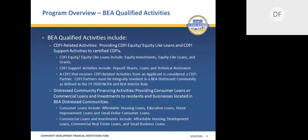BEA qualified activities are broken down into three categories: CDFI-related activities, distressed community financing activities, and service activities. The CDFI-related activities category consists of two subcategories: CDFI equity and equity-like loans, and CDFI support activities. CDFI equity-like loans include equity investments, equity-like loans, and grants. CDFI support activities include deposit shares, loans, and financial assistance.